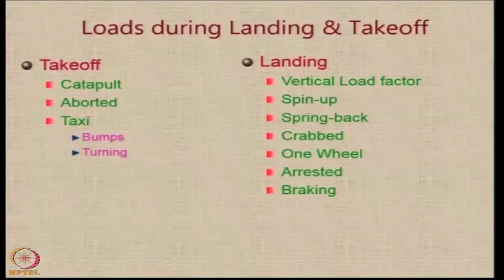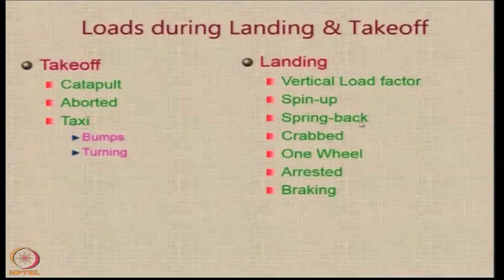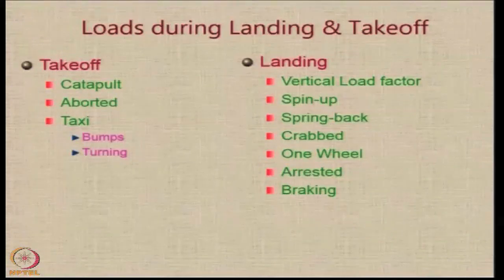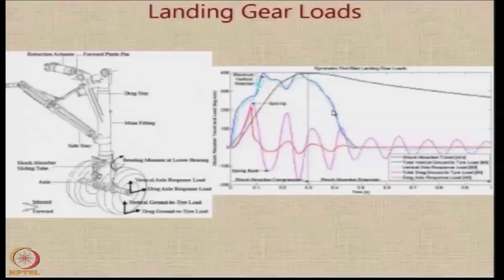There are spin-up and spring-back loads when the landing gear, normally stored inside, is brought down. The landing could happen in a crab condition, leading to side loads. You may have landing on one wheel instead of multiple wheels. There may be an arrested landing where the aircraft engages with a cable on the ship, which absorbs all the energy and stops the aircraft in a small distance. There are also loads due to braking. Landing loads can be very high and vary as a function of time.